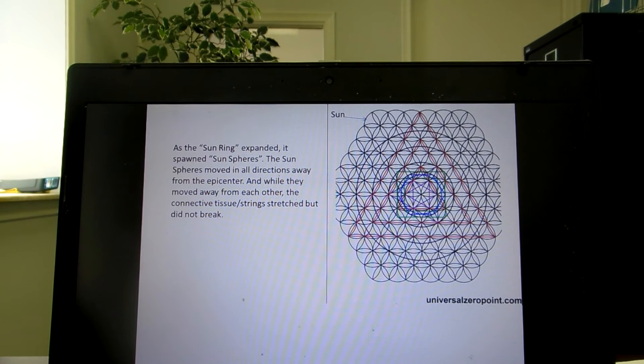As the sun ring expanded, it spawned sun spheres. The sun spheres moved in all directions away from the epicenter, and while they moved away from each other, the connective tissue/strings stretched in tension but did not break.